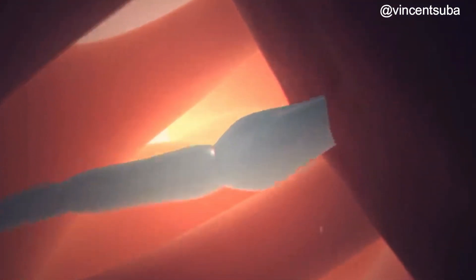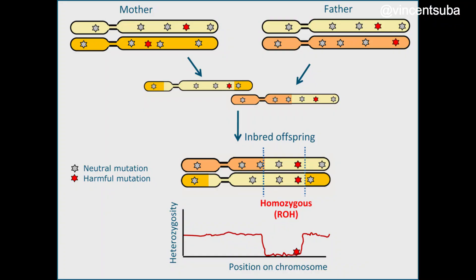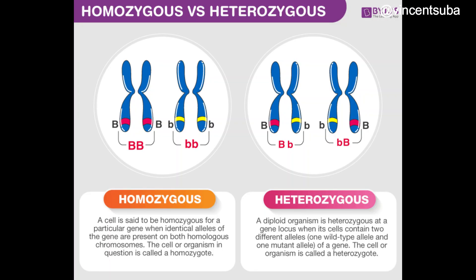If the parents are related by blood, it means that they possess identical alleles of a gene, either in a homozygous or heterozygous state. Homozygous means the alleles are all identical, while heterozygous means the alleles are not identical — one gene is dominant over the other.